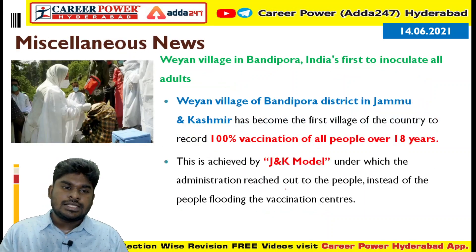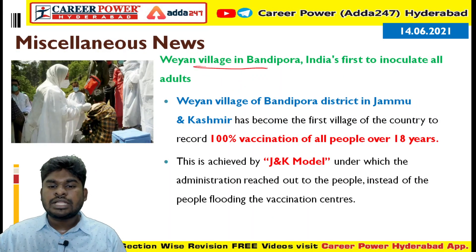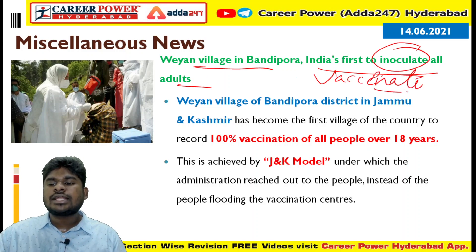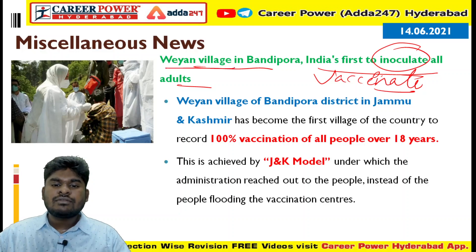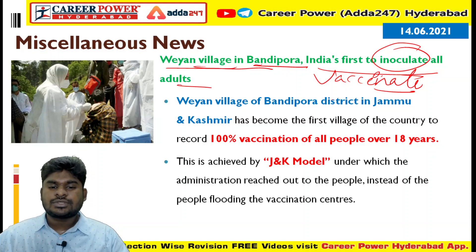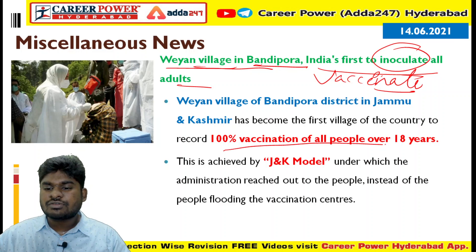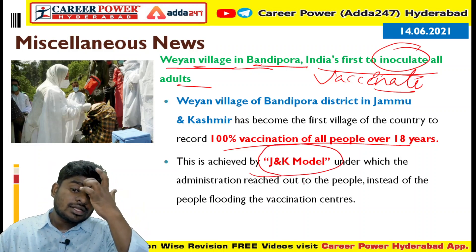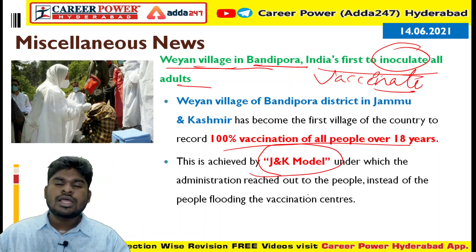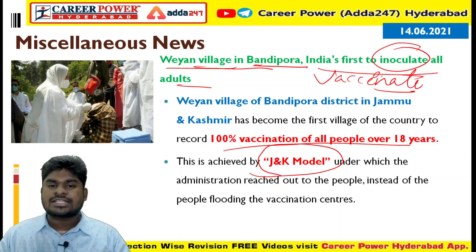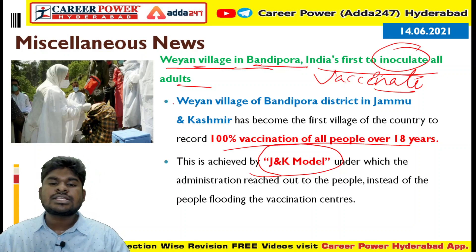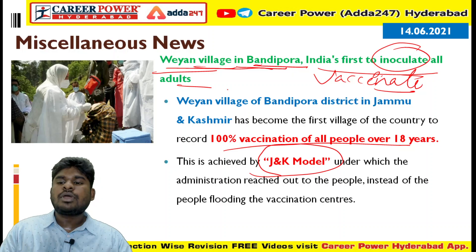The last current affair: Vyan village in Bandipura district, Jammu & Kashmir Union Territory, is the first village in India to inoculate all its adults. This village achieved 100% vaccination of all people over 18 years of age. They achieved this through the JNK model — where health workers reach out to people door-to-door instead of people coming to vaccination centers.